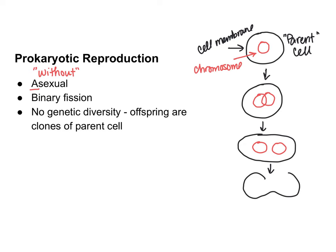Next, the cell membrane starts to pinch in until you ultimately have two separate daughter cells that are identical to each other and identical to the original parent cell. One key thing about binary fission is that there is no genetic diversity, meaning the offspring are identical to each other and to the parent cell.